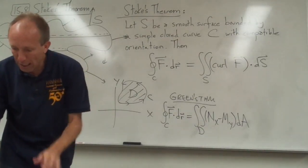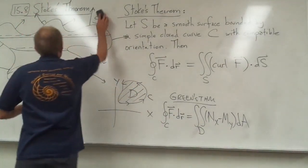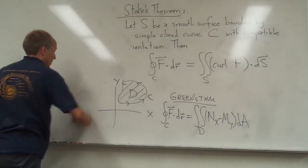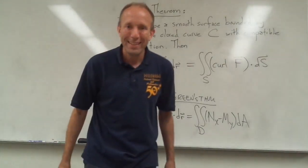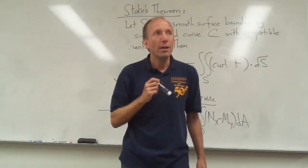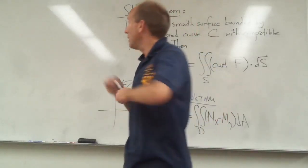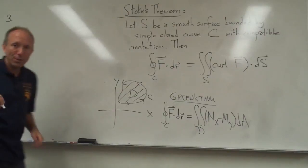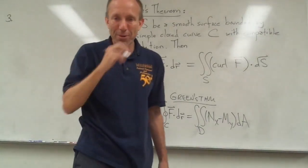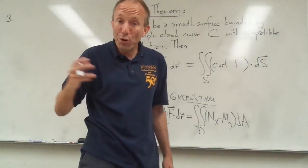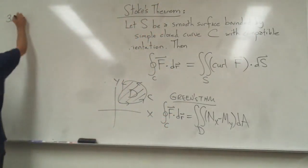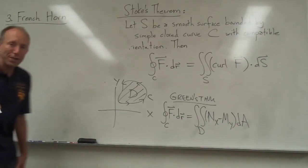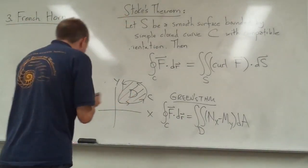Let's do an example of Stokes' Theorem. But before that, let me give you another extra credit item. I told you about my cat earlier. I also have a brother who lives in Wisconsin, and what he does for a living — this is the thing I want you to write down for number three — he plays the French horn. He's a professional musician. Just write French horn; that is your third item of extra credit for the upcoming test.